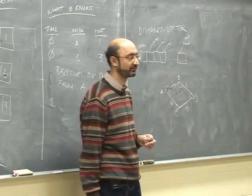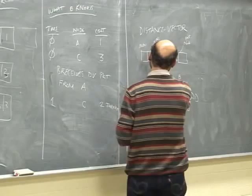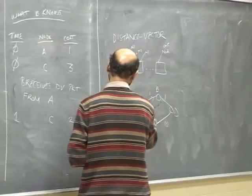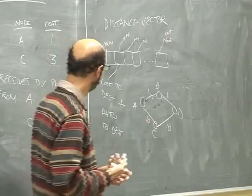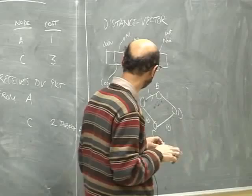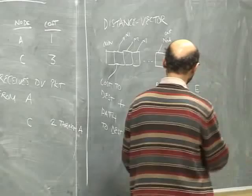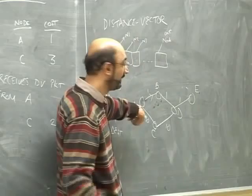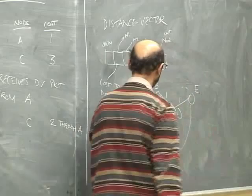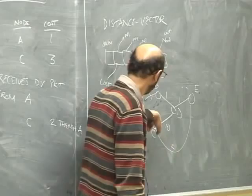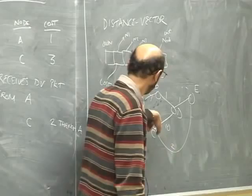The distance vector algorithm is used in inter-AS routing, specifically a modified version called the path vector algorithm rather than plain distance vector. Instead of just distances, you include the cost to destination plus the path to destination. This lets you know which path was used. For example, B tells A: I can get to E through path B→D→E at cost 2. C tells A: I can get to E via direct hop C→E at cost 2. A computes: through B costs 1+2=3, through C costs 10+2=12, so it chooses B.